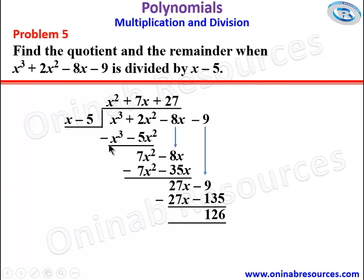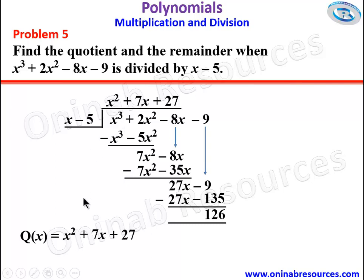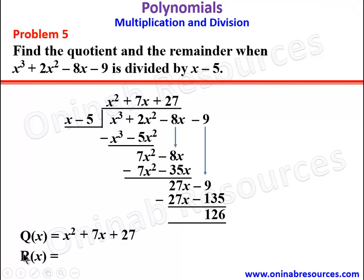We are done dividing. The quotient Q of x is x squared plus 7x plus 27, and the remainder R of x is 126. So we are done with problem 5, and this is the highest we can take in this tutorial.